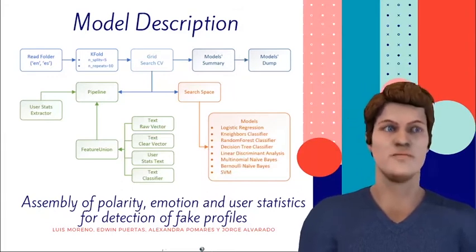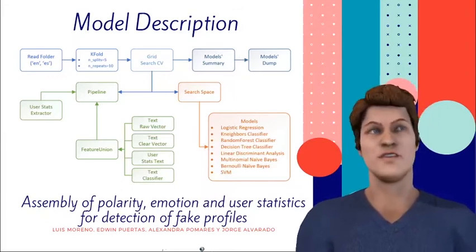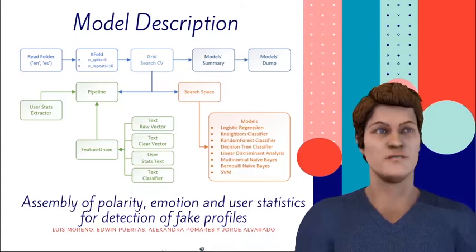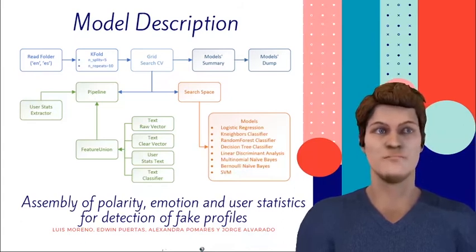In the next phase, we implemented a search space with a group of classification models. Finally, we used GridSearchCV library to make a better search taking into account the hyperparameters of previously configured classifiers.